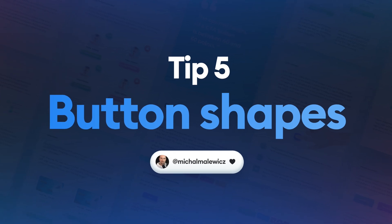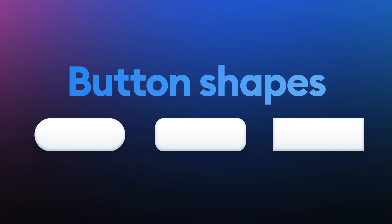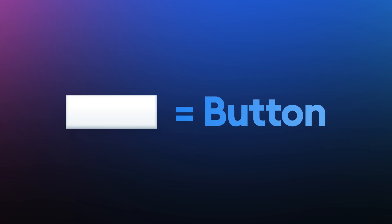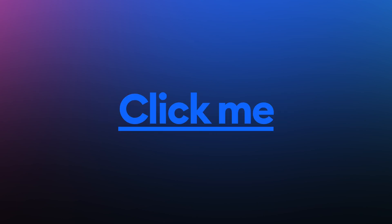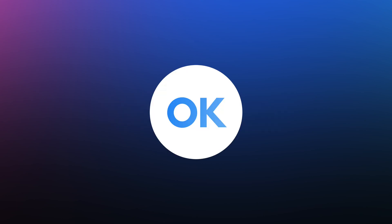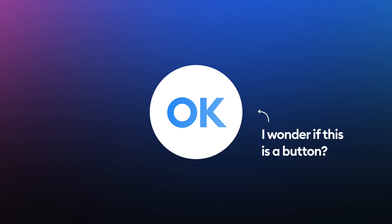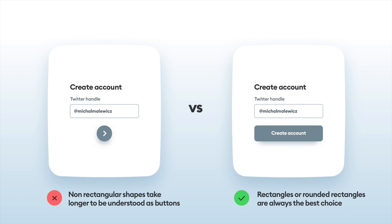Tip number five. When we're talking buttons, we're thinking rectangles. They're the one shape that's instantly recognized as a button in user interfaces. The second most popular? Underlined text links. The third is circles, but they're a far third. Other shapes should be avoided completely, and even circles take a little while to be understood as clickable. You can't go wrong with a rectangle — keep that in mind. Can be rounded, can be sharp, but always better than a circle, triangle, or some random blob.